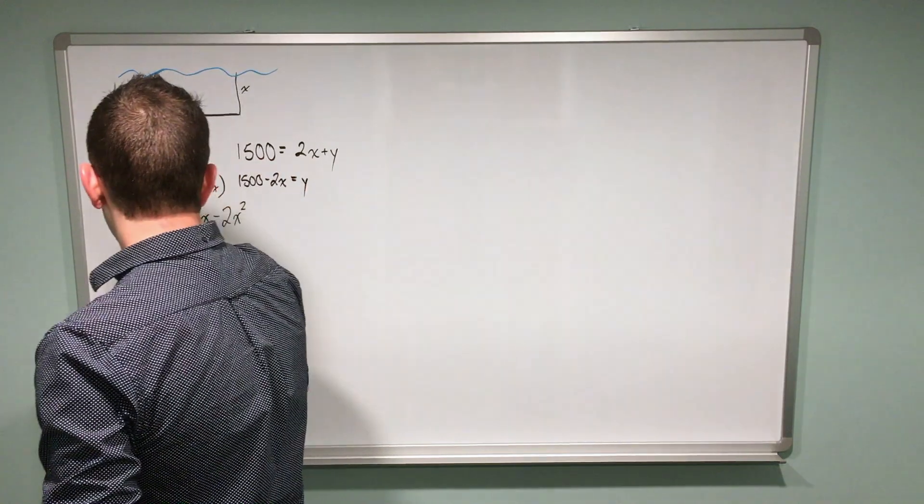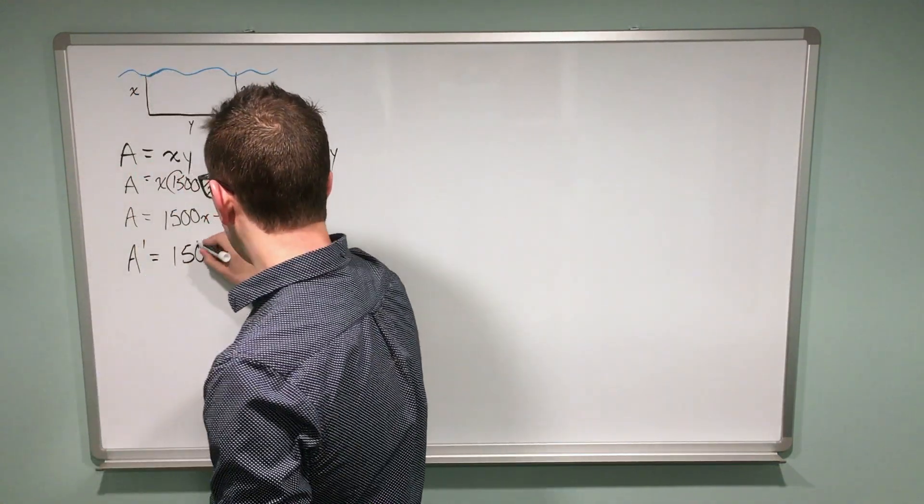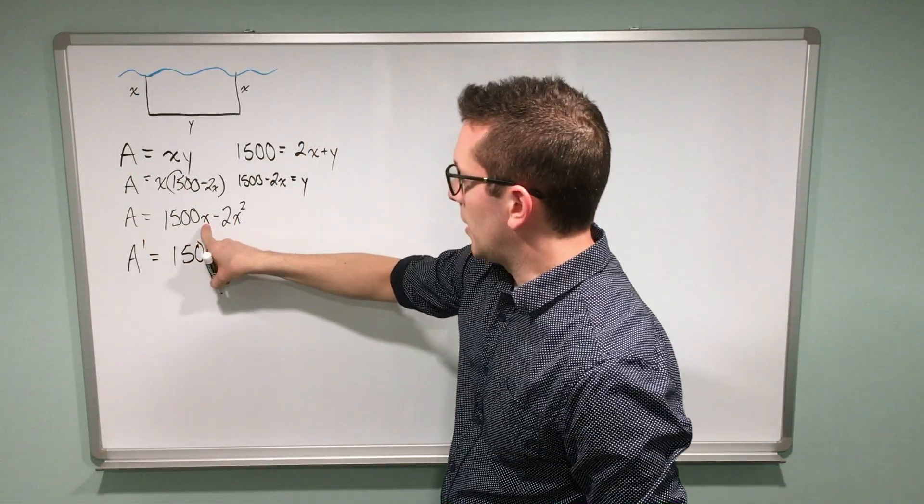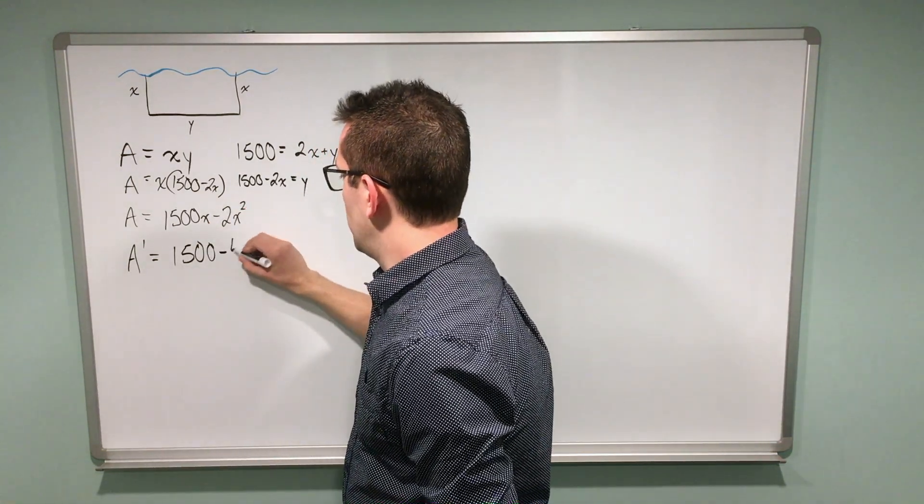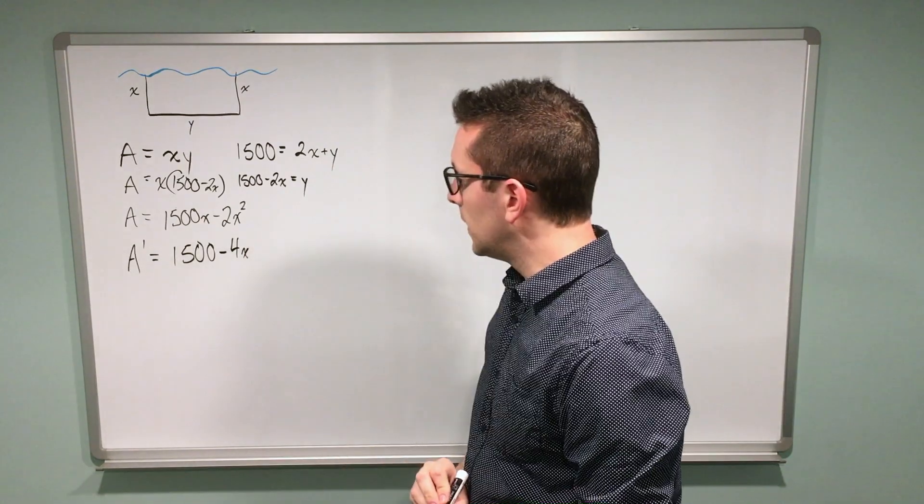So I'm going to take the derivative just by applying the power rule for derivatives. That tells me that the x disappears, I can take this 2, bring it down, multiply by that 2 to get 4x. So A' = 1500 - 4x. That's my derivative.